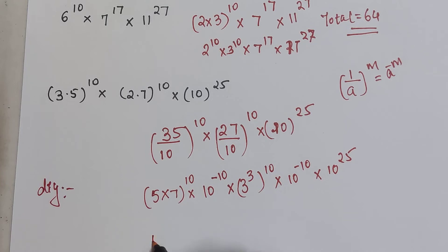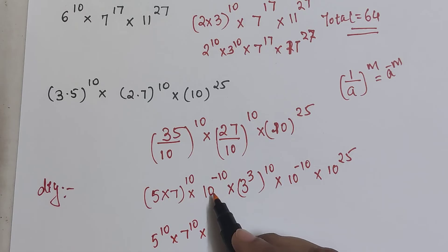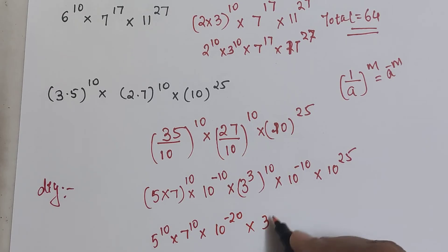So now breaking this we get 5 raised to 10 into 7 raised to 10 into, so 10 raised to minus 10, 10 raised to minus 10, that gets you 10 raised to minus 20. This becomes 3 raised to 30 and this becomes 10 raised to 25.